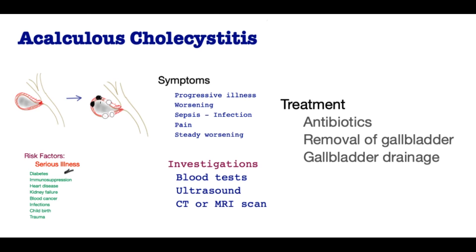The condition is characterized by the absence of gallstones and development of gallbladder inflammation and infection, which may lead to necrosis and perforation. Patients may be seen as worsening from their existing illness, and those who cannot communicate clearly may only show a generalized deterioration with signs of infection or sepsis. Those who can communicate would report pain in the right side of the abdomen just below the rib cage, steadily worsening if untreated.